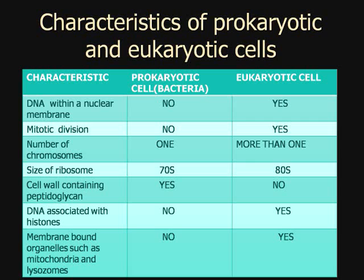Mitotic division: does a prokaryotic cell divide through mitosis? No, it does not. For eukaryotic cells? Yes, it does. Number of chromosomes: prokaryotic cells only have one chromosome, while eukaryotic cells have more than one.